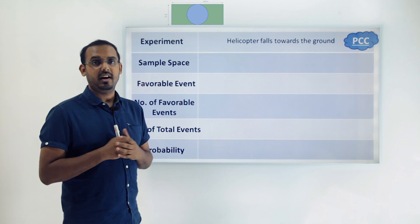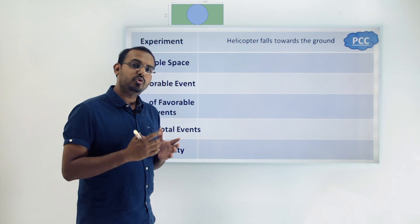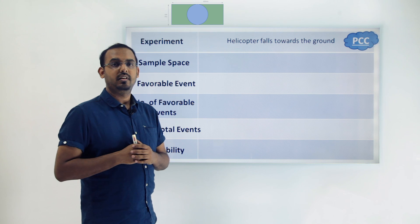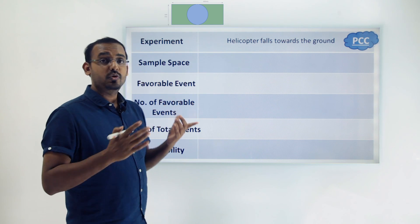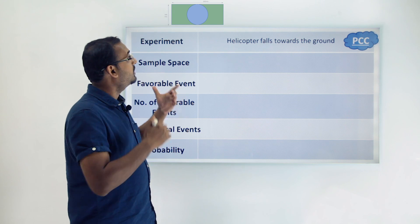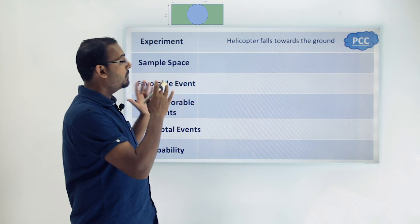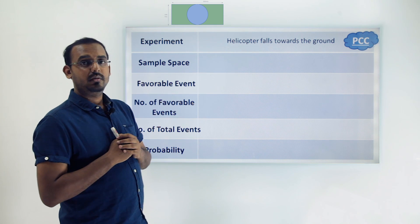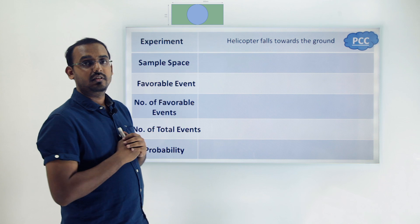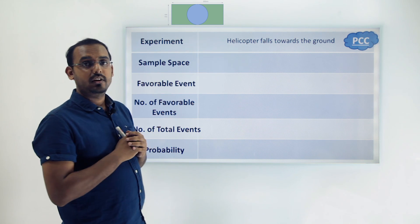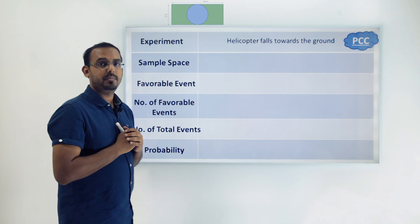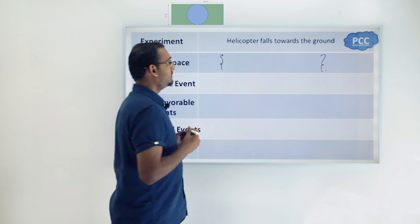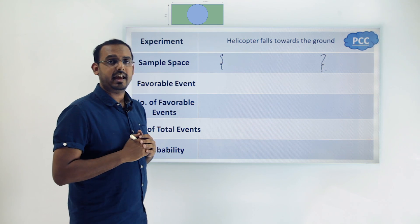So how do we represent that? Is there any concept we can use to represent all the points within an enclosed region? Yes — we can use the concept of area to represent the number of points present within that region. So the sample space here becomes the complete area of the rectangular region, which forms the sample space for us. We need to calculate the area of this rectangular region.